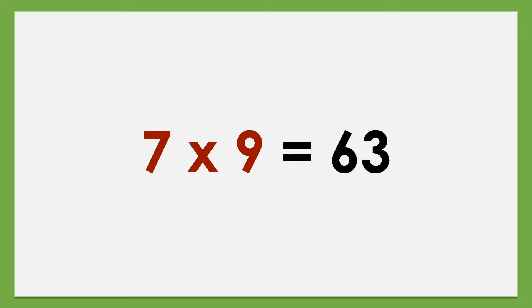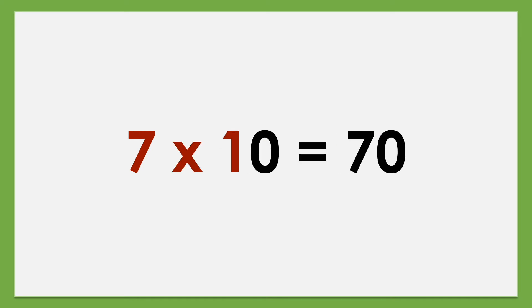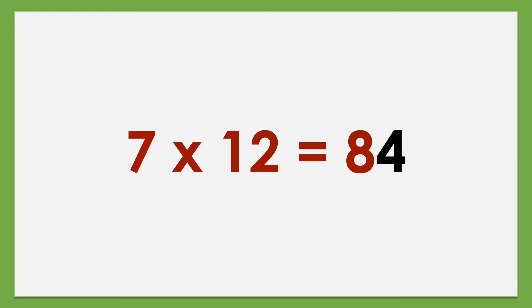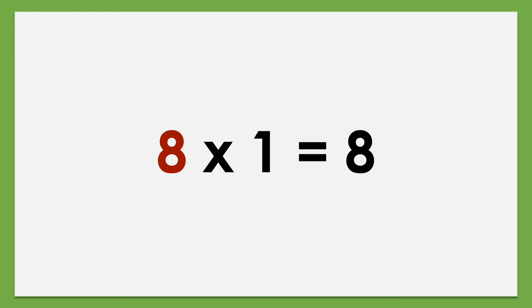7 times 9 equals 63, 7 times 10 equals 70, 7 times 11 equals 77, 7 times 12 equals 84. Set of 8.